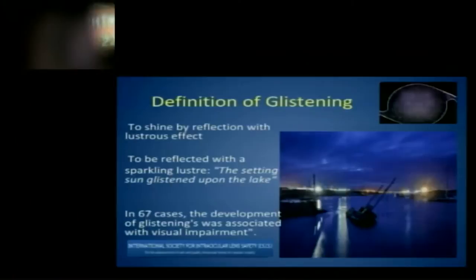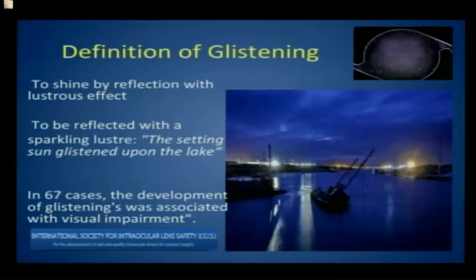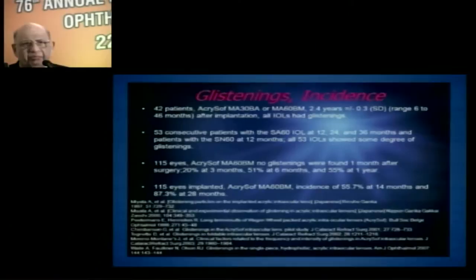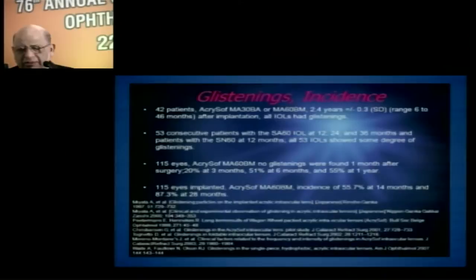When we talk of glistening, what do we mean? Glistening essentially means to shine by reflection with a lustrous effect — a setting sun glistening off the lake. The International Society for Intraocular Lens Safety originally showed data of 67 cases where visual impairment was significant. Glistening incidence with Acrisoft had a good number of cases, and it occurred with a number of other lenses as well.